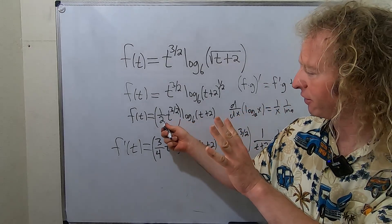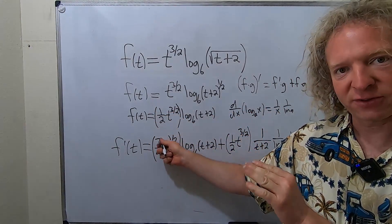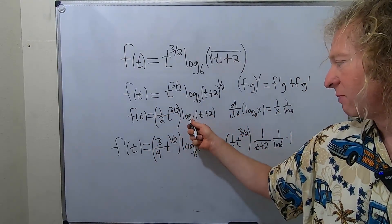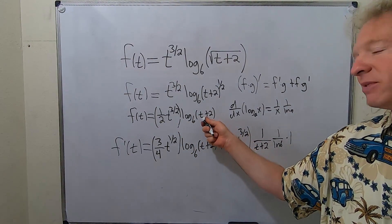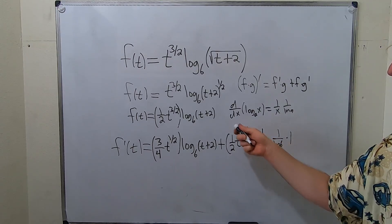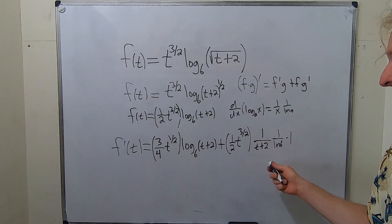So it's the derivative of the first. So you brought down the 3 halves. So we have 3 fourths. Subtracted 1. So we got here. Times the second plus the first. Times this derivative here. So it's 1 over t plus 2. 1 over ln 6 times the derivative of the inside.